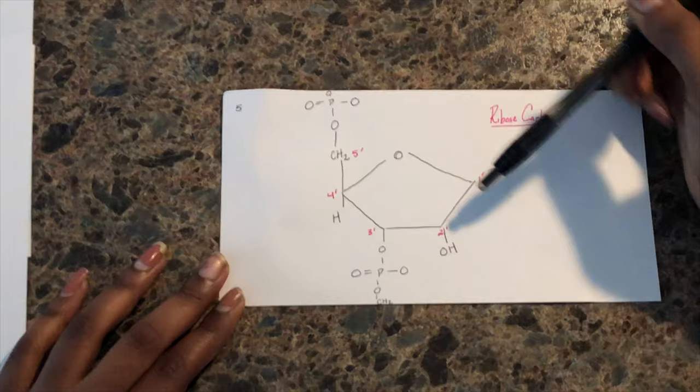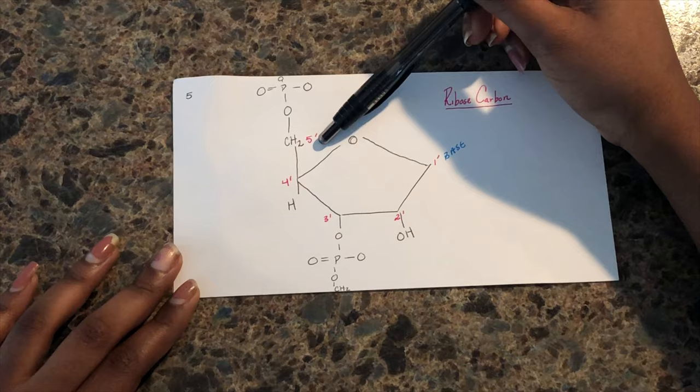The three prime region attaches to the next five prime phosphate, and the five prime region attaches to the phosphate.